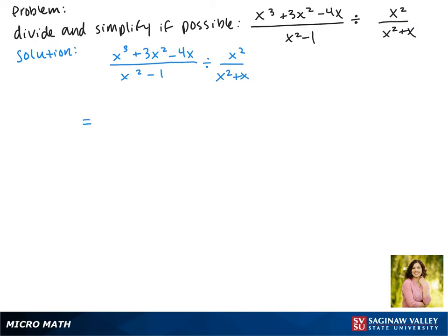Our first step in dividing these is to multiply by the reciprocal, so our first term will stay the same. Our division becomes multiplication and then we take the reciprocal where we switch the denominator and the numerator.